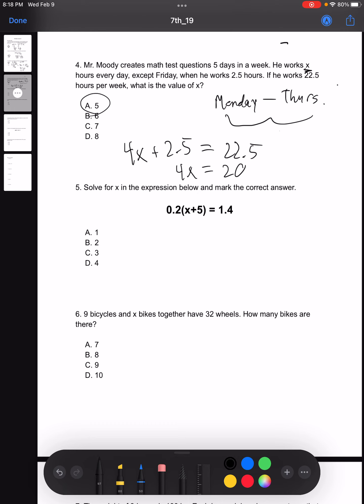For number 5, solve for X in the expression below and mark the correct answer. 0.2 times X plus 5 is equal to 1.4. Well, first we want to get this X plus 5 by itself. So what we can do first is divide both sides by 0.2. That gets us X plus 5 is equal to, so we can do 0.2 divided by 1.4. Move your decimal point over 1, and you get 7. Subtract 5 on both sides, and you get X is equal to 2, making our answer B.